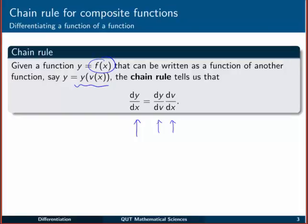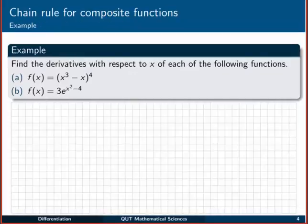Now at first that might seem a little weird, especially the dy/dv bit. Let's look at an example and see what that means. We're going to find the derivatives with respect to x of these two functions: first, the fourth power of x cubed minus x, and then 3 multiplied by e to the x squared minus 4.